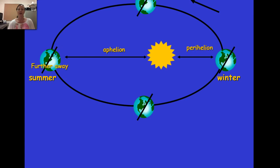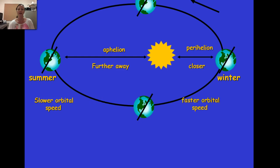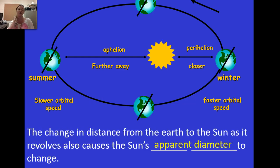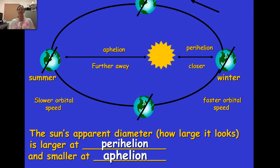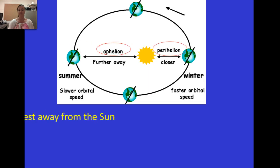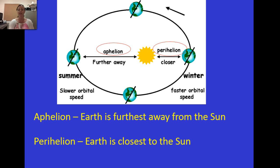In winter, Earth is at perihelion — the point where it is closest to the sun in its revolution. This also affects the sun's apparent diameter: when we're closer to the sun at perihelion, the sun appears larger. When we're farther away in summer at aphelion, the sun appears smaller. Aphelion is Earth's farthest point from the sun in its revolution, and perihelion is the closest point.